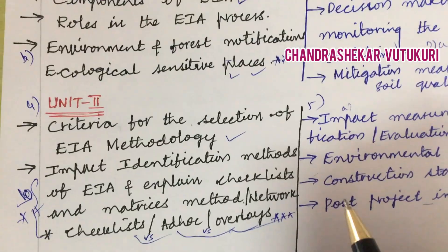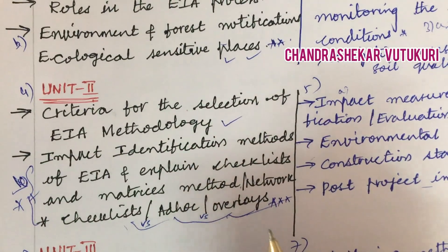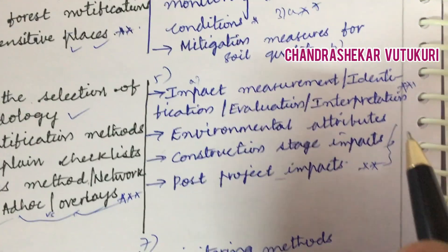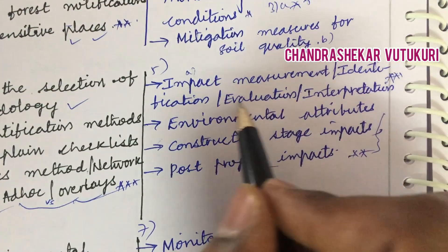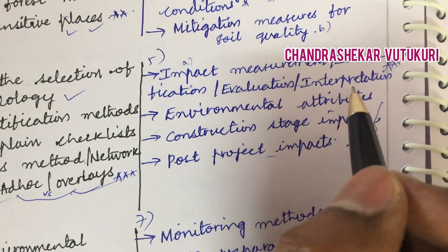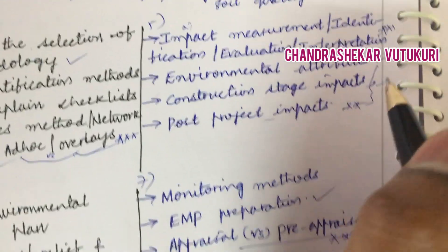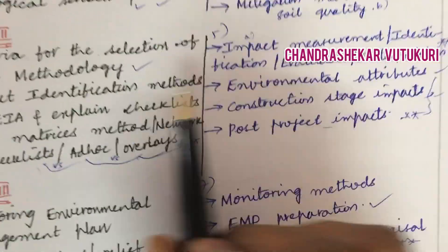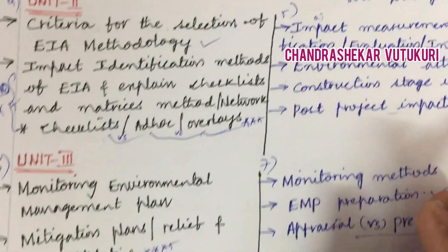These Unit 2 methods may also appear as short questions involving differences between them. Question 5 covers impact measurement, impact identification, impact evaluation, and impact interpretation — from which you may get short or long questions. Environmental attributes may be a short question, and construction stage impacts as well as post-project impacts may form the fifth question.